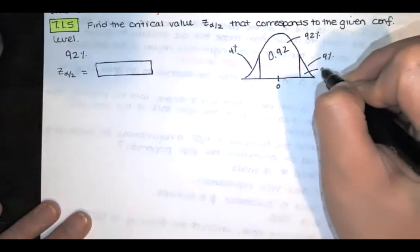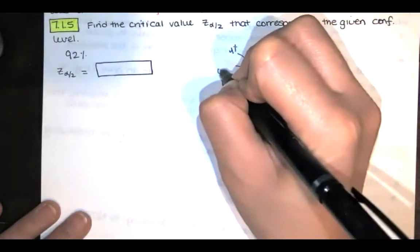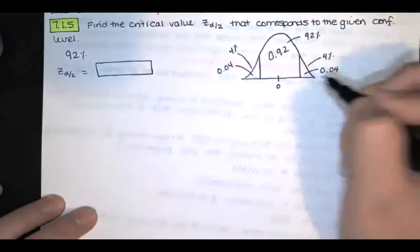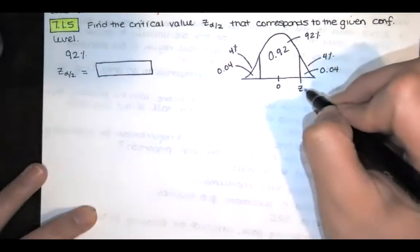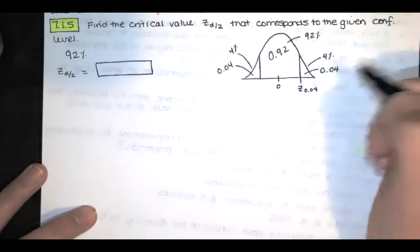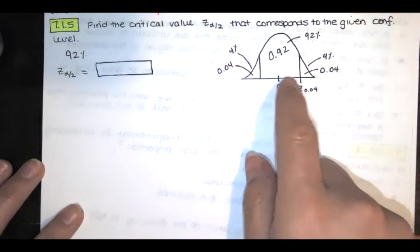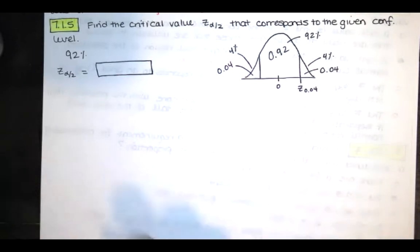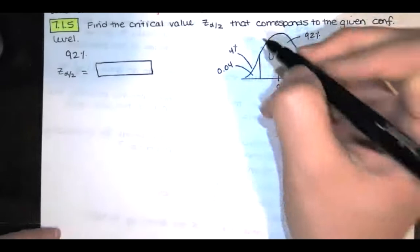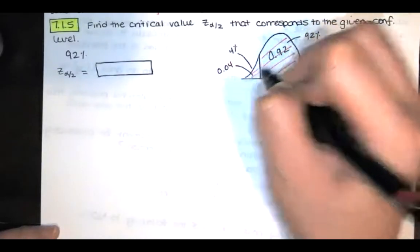In decimal form, that's 0.04. So z sub alpha over 2 in this case is z sub 0.04. It's separating that top 4% from that bottom 92 plus 4% or that bottom 96%. So the area to the left is this area plus this area.